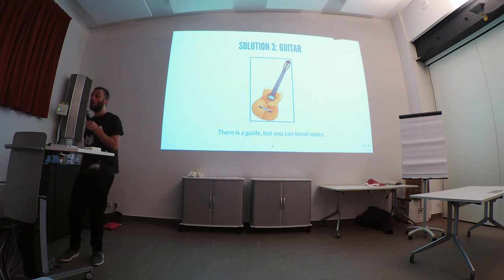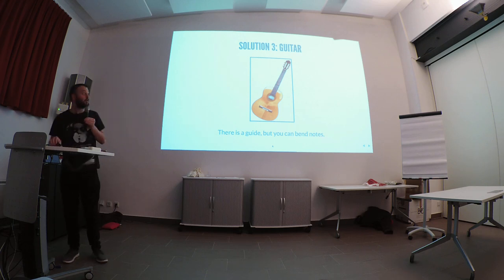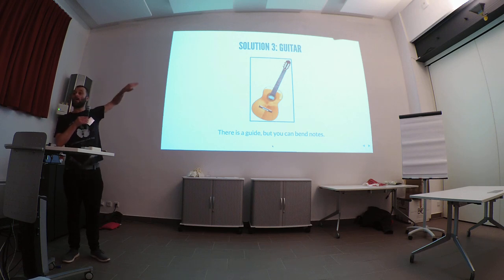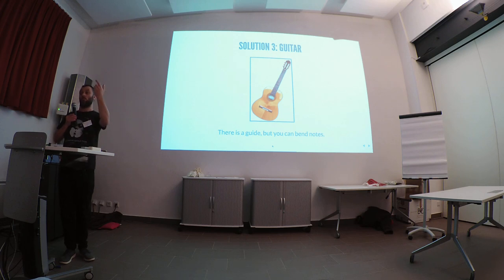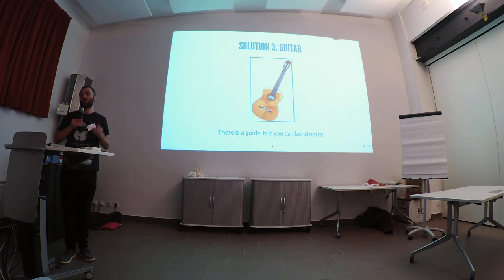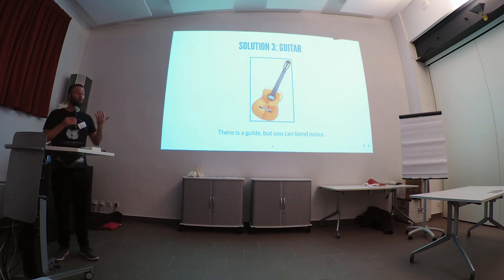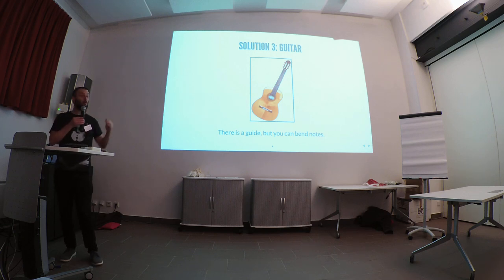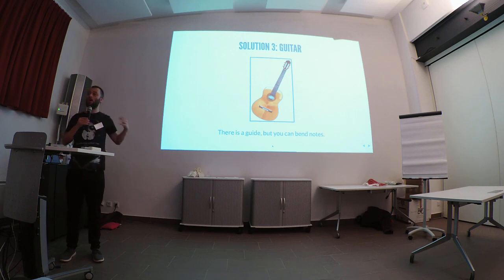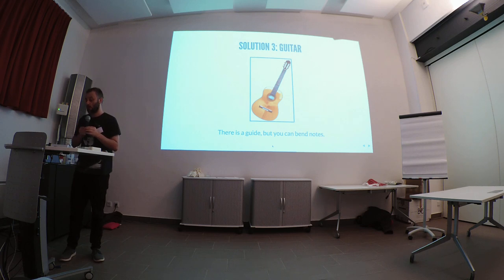A guitar is a cool example of a hybrid design. It looks like a violin, but you can see those fret bands along the neck — they're guides. If you put your finger so the string is shortened on one of those bands, you get a particular discrete pitch. But you can also bend it by pulling the string tighter, making the note higher. So a guitar gives you that default way to play in-type, but also gives you an escape hatch — a way to go beyond the defined boundaries.